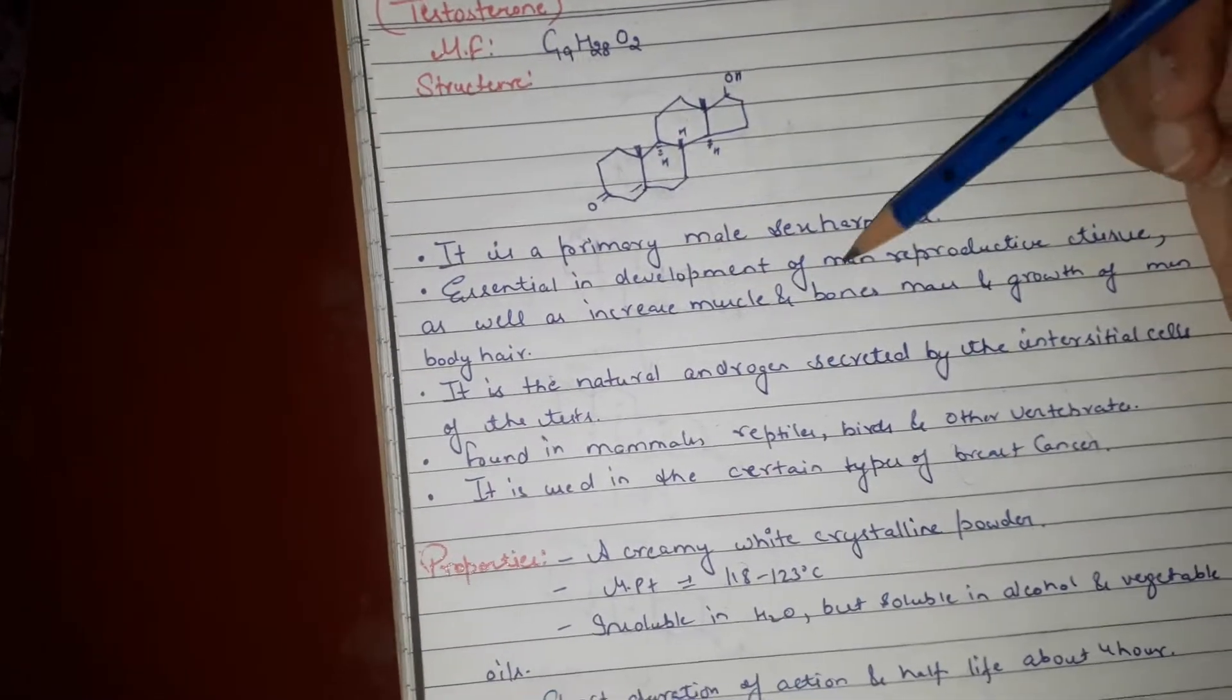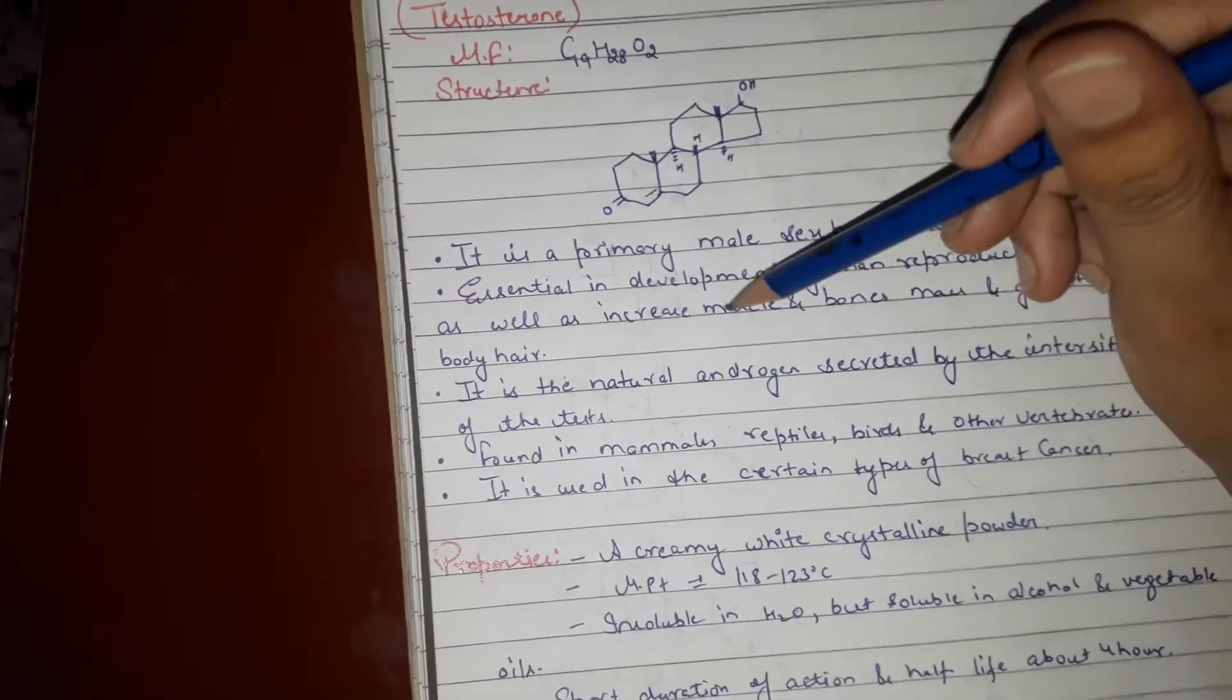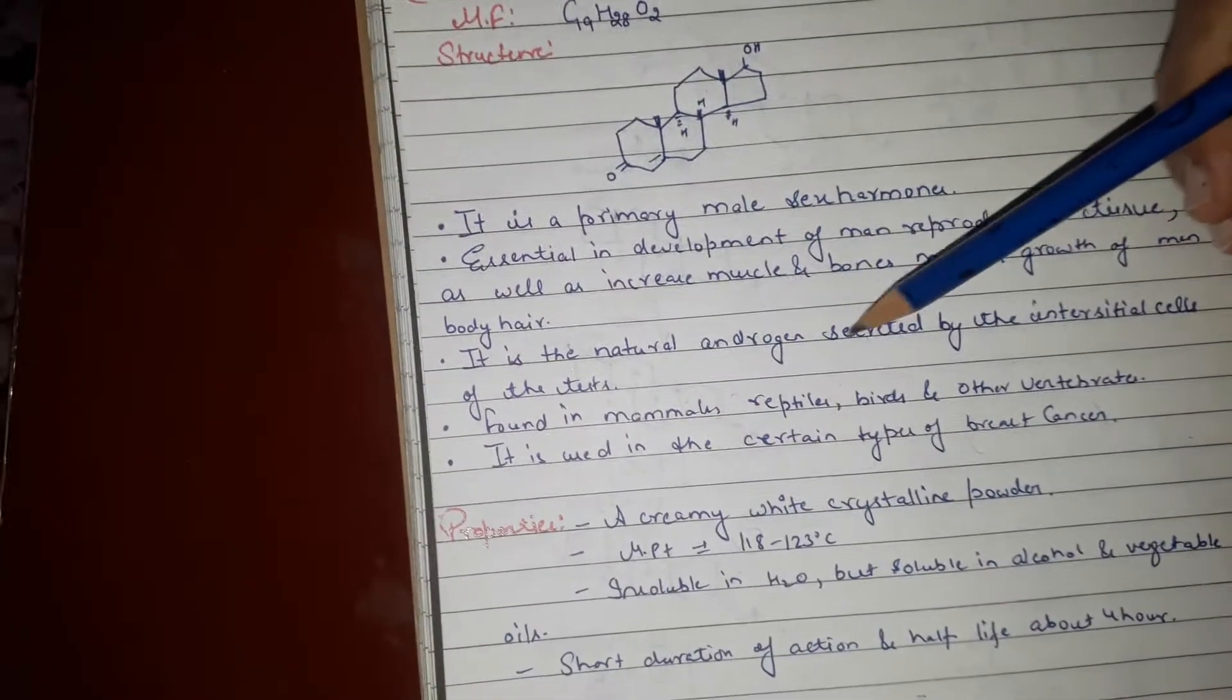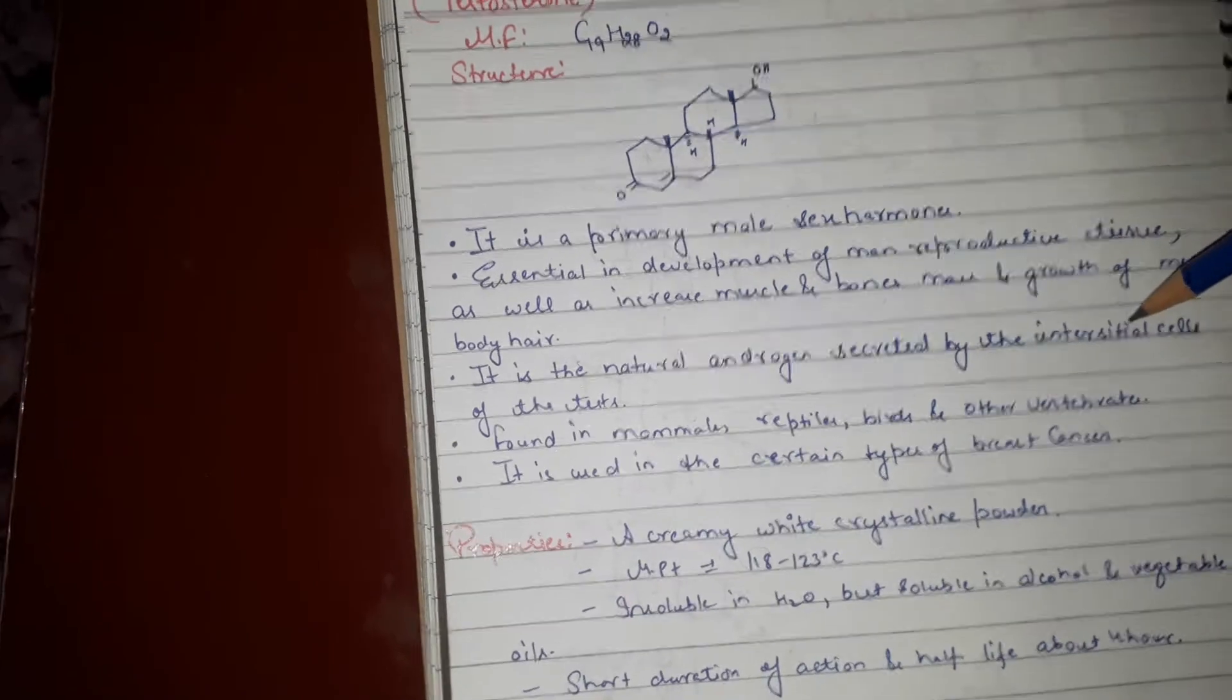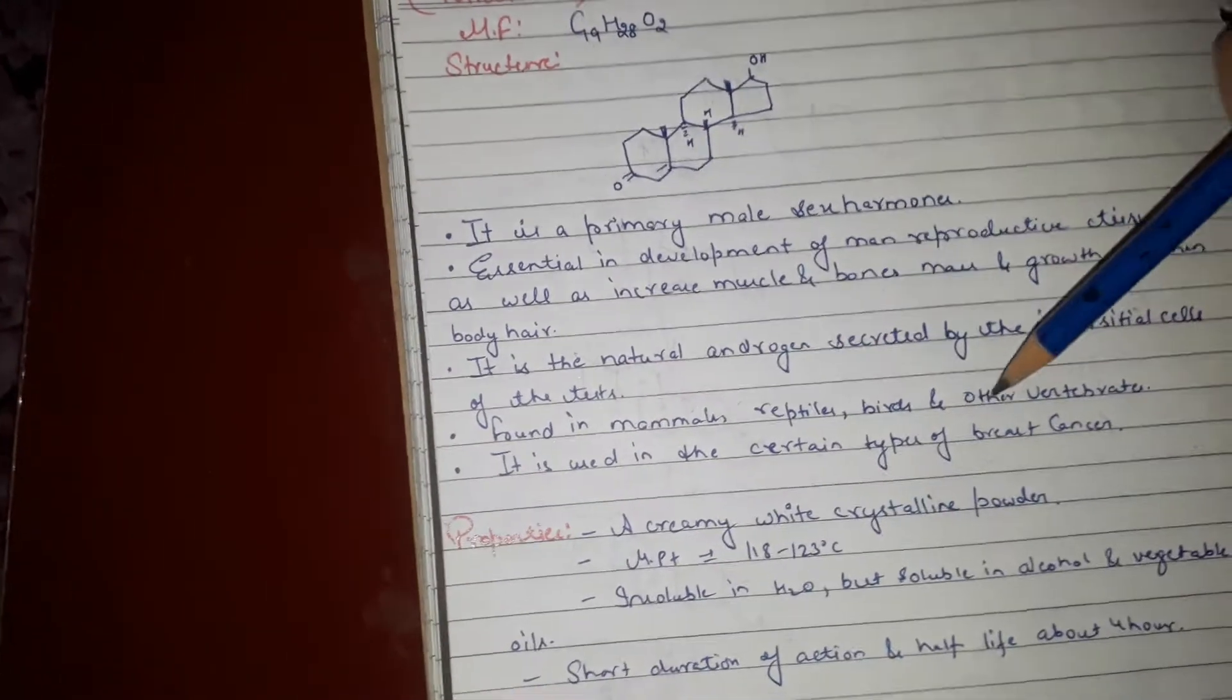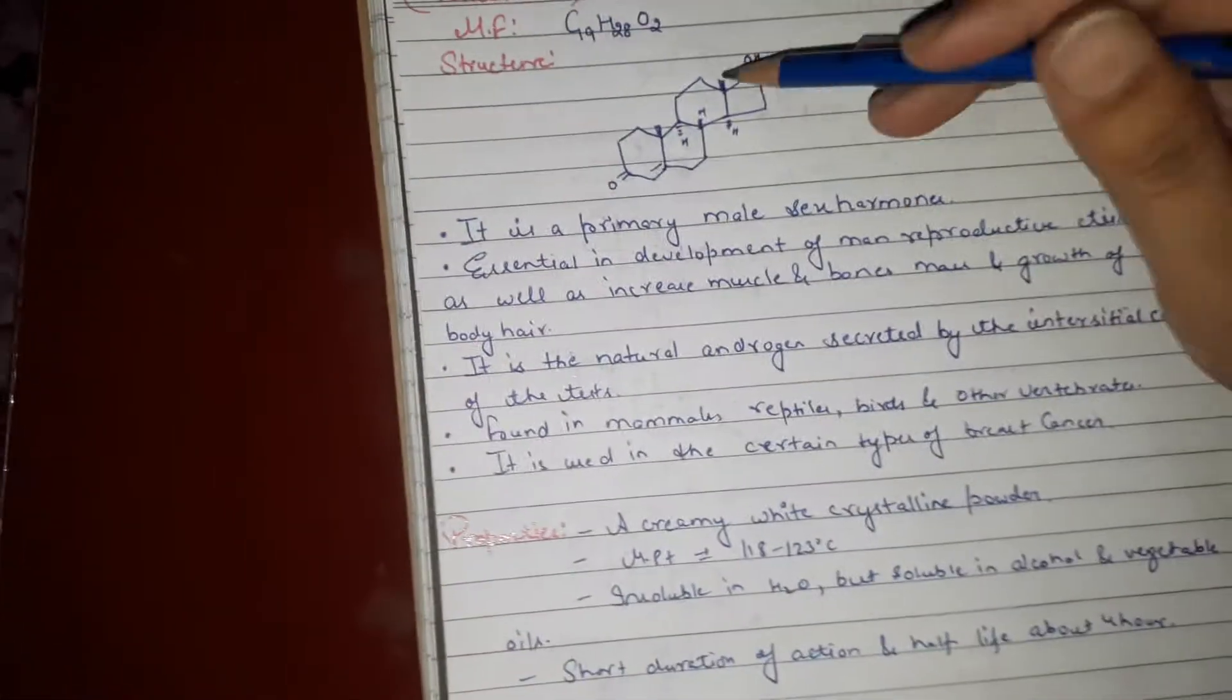Primary male sex hormones. Essential for development of men's reproductive tissue and increased muscle and bone mass, growth of men's body hair. It is naturally secreted by interstitial cells of testes, found in mammals, reptiles, birds and other vertebrates. Used in certain types of breast cancer.